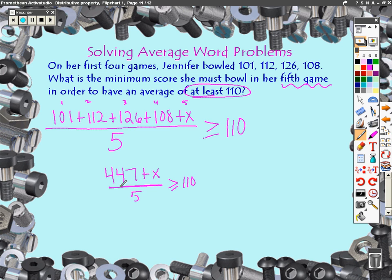Anytime I have a long division here, it's dividing everything. Let's get rid of all that division. So I'm going to multiply because that's the inverse. This leaves me 447 plus x is greater than or equal to 550.